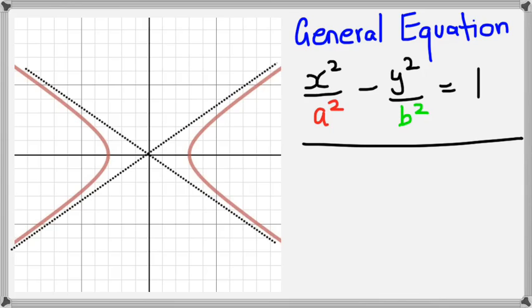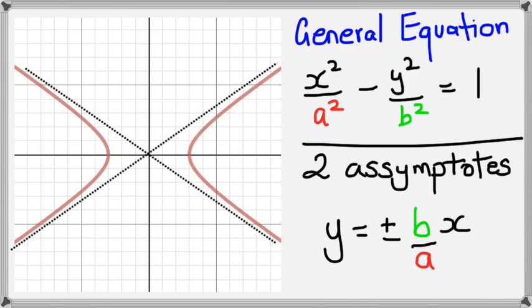Now unlike the ellipse with the hyperbola, you don't actually have major axes. The two black lines, they're actually two asymptotes. And the two asymptotes have an equation of y equals plus or minus b over ax. I'll go into a little bit more detail about this in the next slide. All right, so moving on.